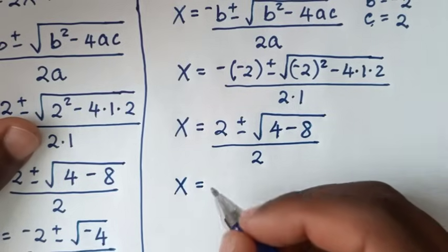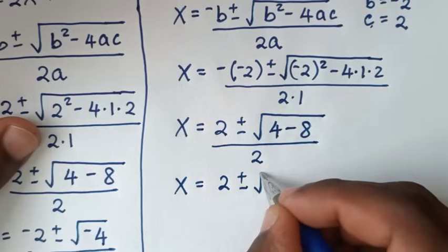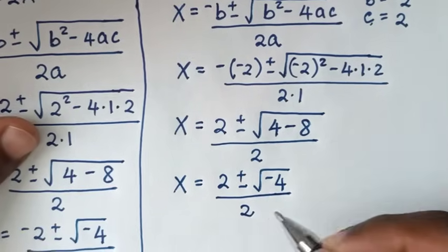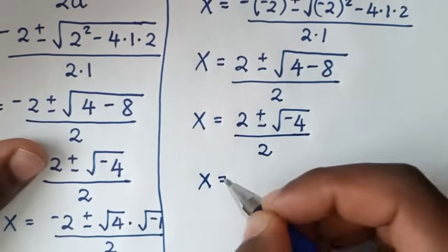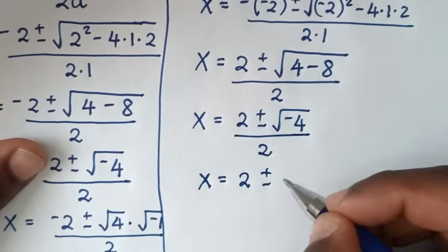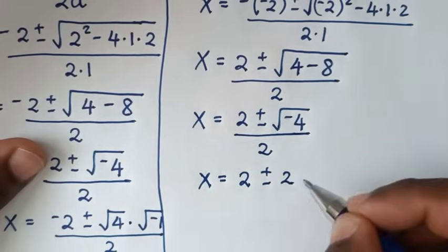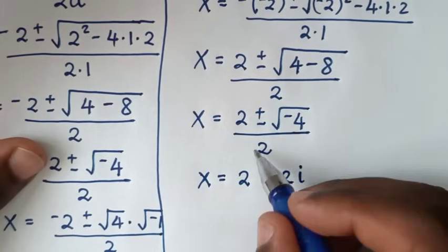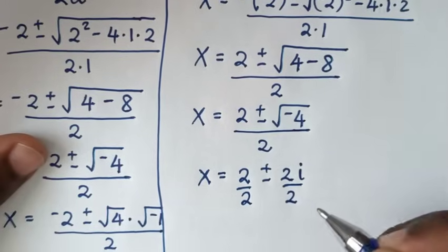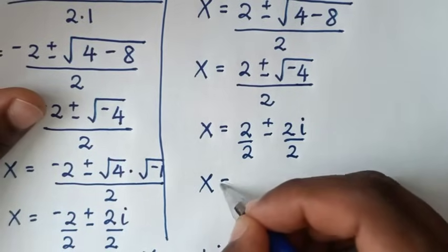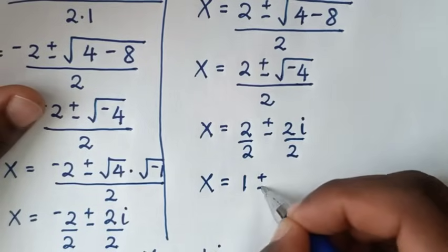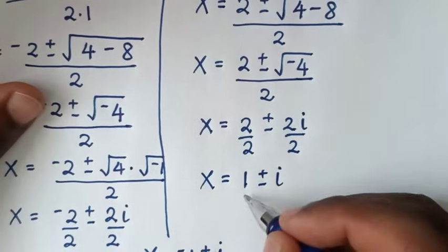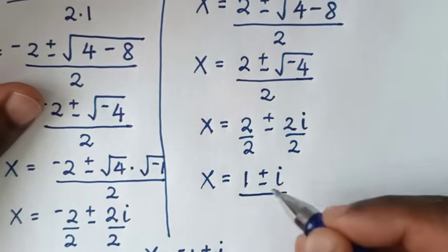So it will be x = 2 ± √4 · √(−1) over 2, which is x = 2 ± 2i over 2. Dividing each part by 2, x = 2/2 ± 2i/2, so x = 1 ± i. So also from here we have two solutions of x because of the plus or minus.